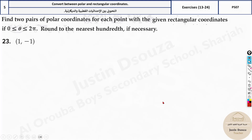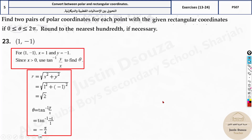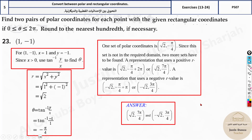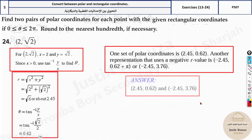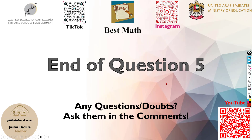Subtracting π from 5.35 gives the second theta, and the radius changes sign. For the last problem, note that the two thetas should differ by π — for example, 3.76 minus 0.62 equals π. Use this as a check, but always solve using the formulas. That's the end of question 5.